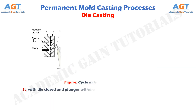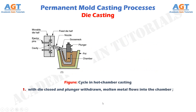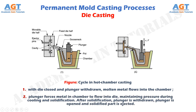Figure one shows the first step in hot chamber die casting, where with the die closed and plunger withdrawn, molten metal flows into the chamber. Figure two shows the second step, where the plunger forces the metal in the chamber to flow into the die, maintaining pressure during cooling and solidification. After solidification, the plunger is withdrawn, the die is opened, and the solidified part is ejected.